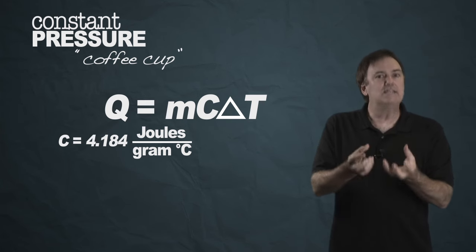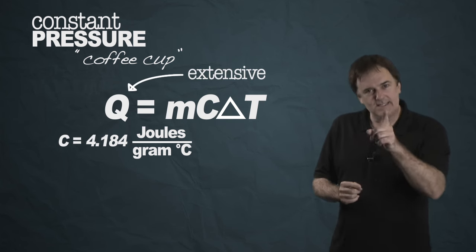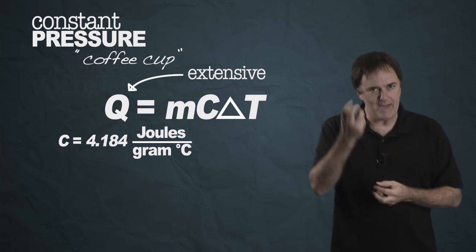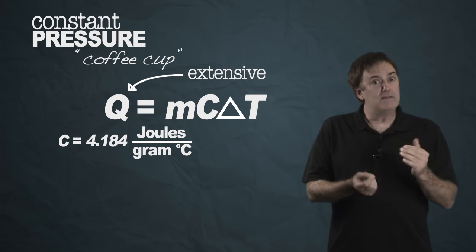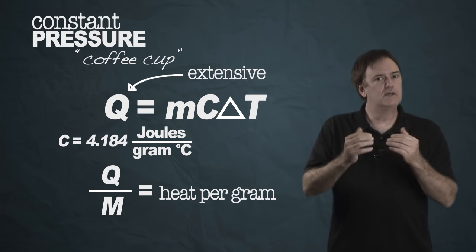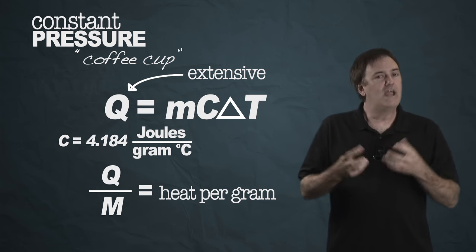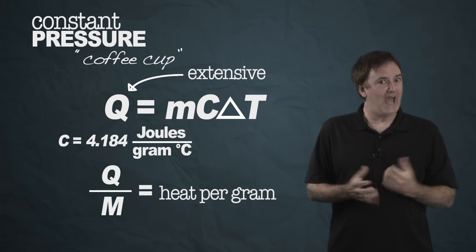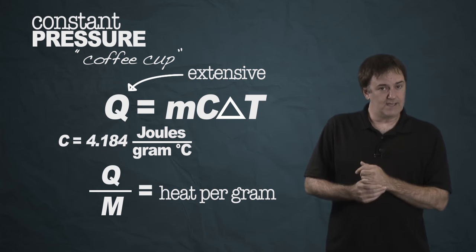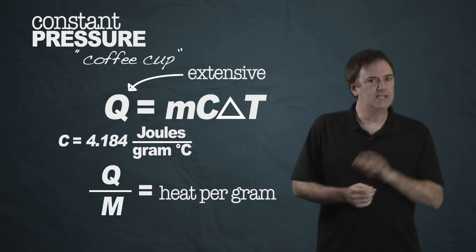That amount of heat is what was released from the reaction. That's an extensive property. We know the amount. Now you divide it by how much stuff you used, the amount of heat per gram, or heat per mole, and you've got yourself the answer to the actual reaction you just ran. That's coffee cup calorimetry, easy, cheap.